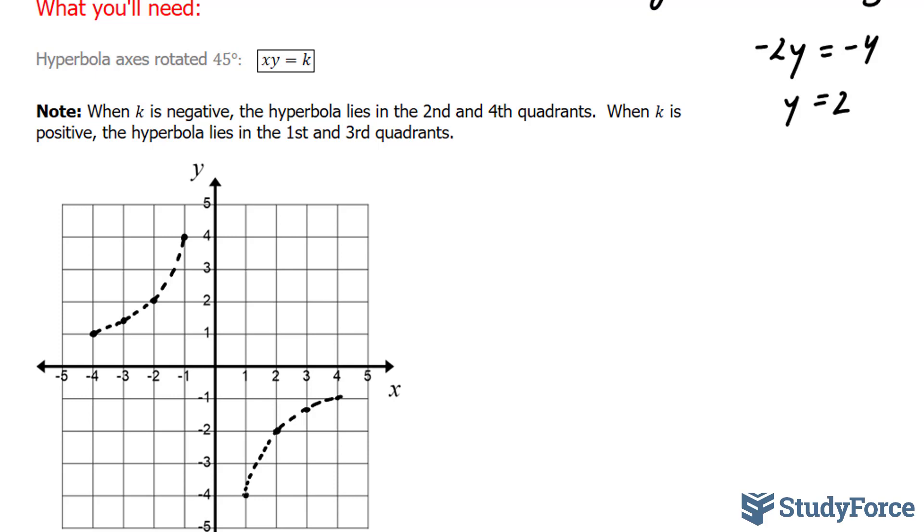Now as you can tell, just from visual inspection, that the vertex lies at 2 and 2. So this point right here has the coordinates negative 2 and 2. And this vertex has the coordinates 2 and negative 2.